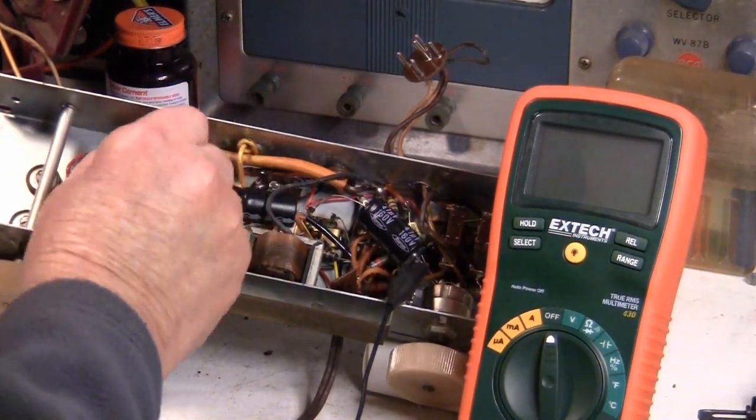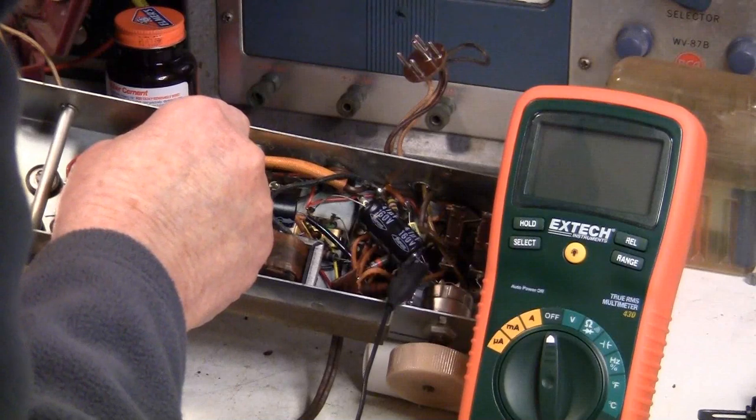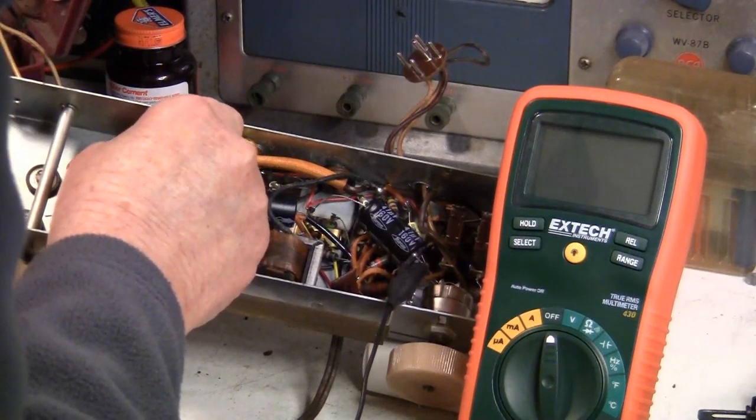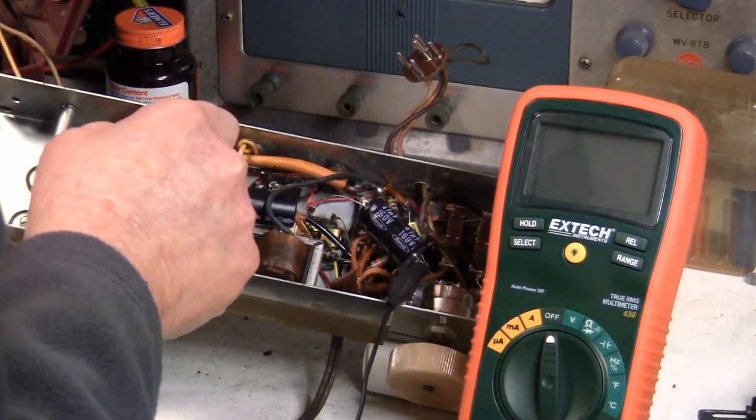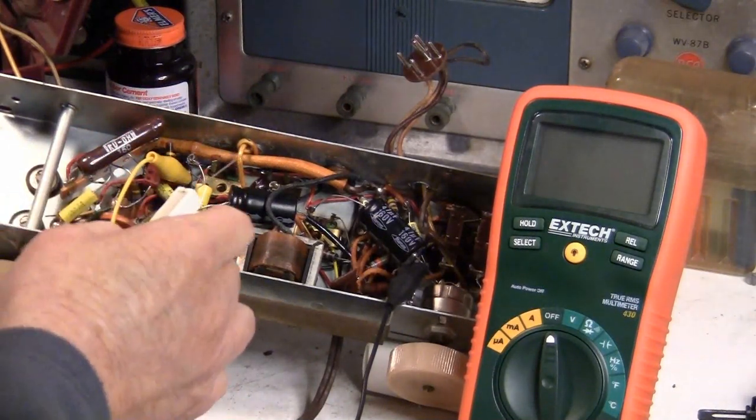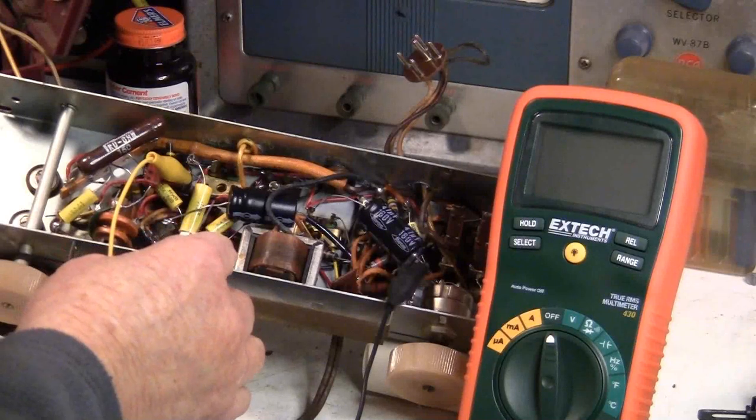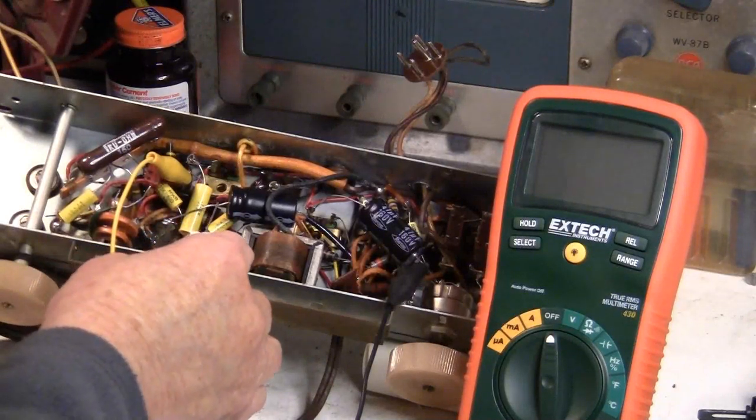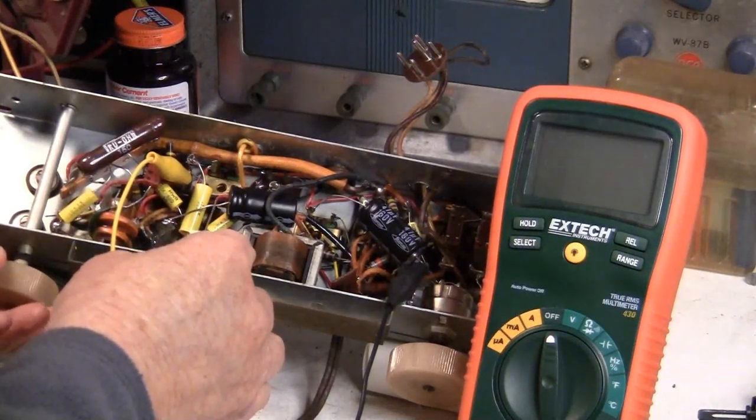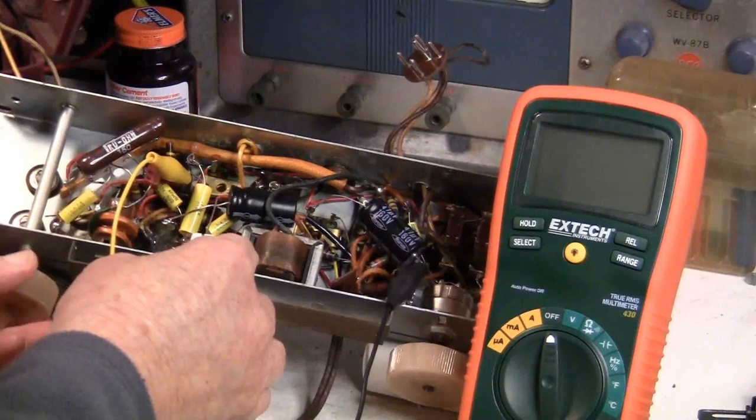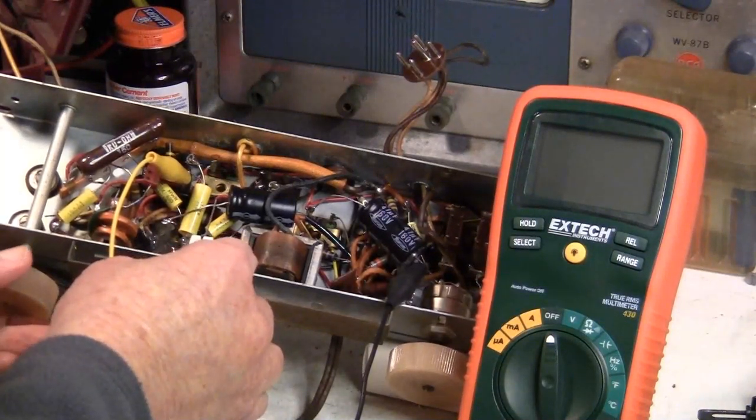I connected an alligator clip to pin 3 of V1. Make sure I don't short anything. And then connected it to B plus. And I can hear the stations coming in.